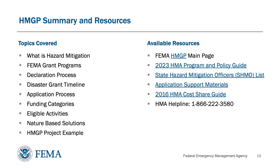In this video, we've reviewed the basics of hazard mitigation and the FEMA hazard mitigation assistance programs. We talked about the declaration process, the HMGP grant timeline, and the HMGP application process. We gave an overview of the funding categories such as regular projects, management costs, and advanced assistance. Then we wrapped up with a high-level look at eligible project types, nature-based solutions, and an example of an HMGP project involving a microgrid.